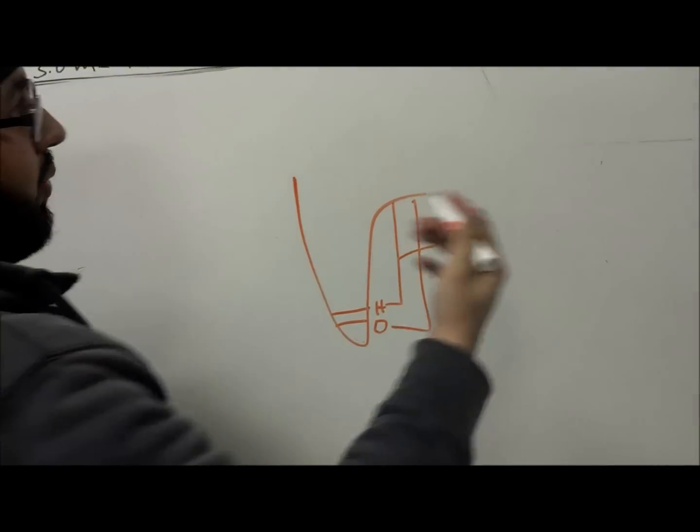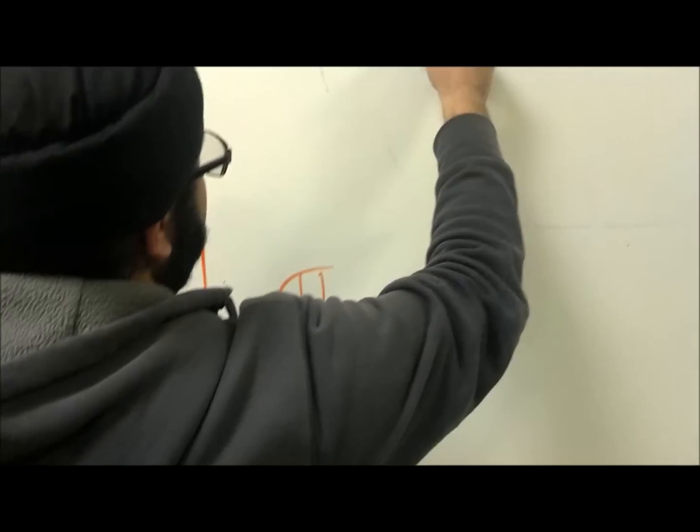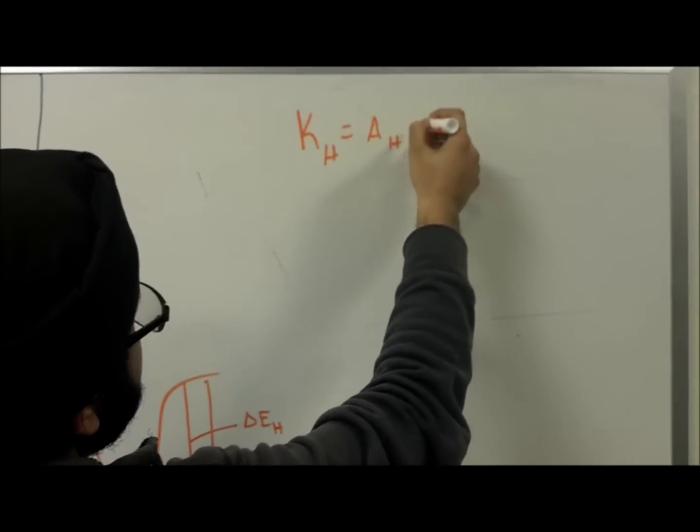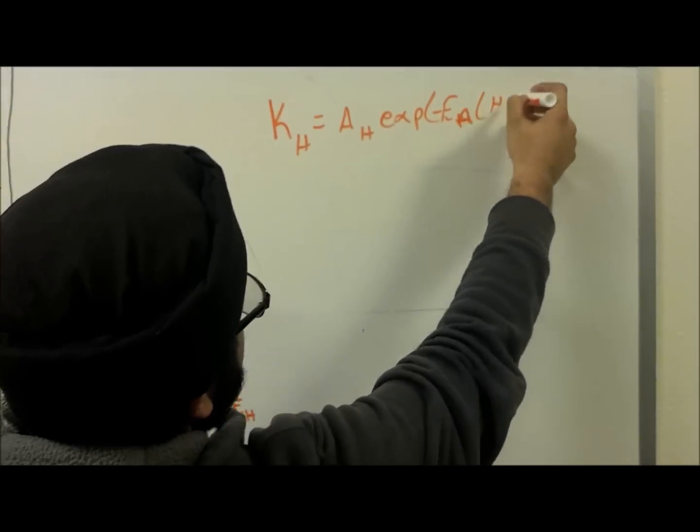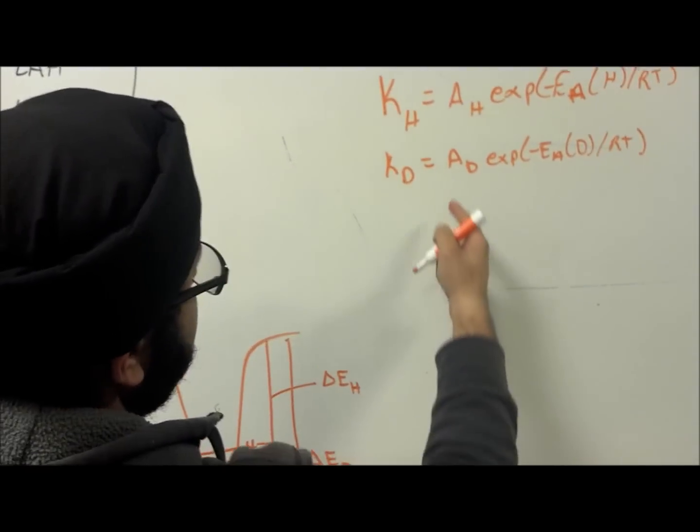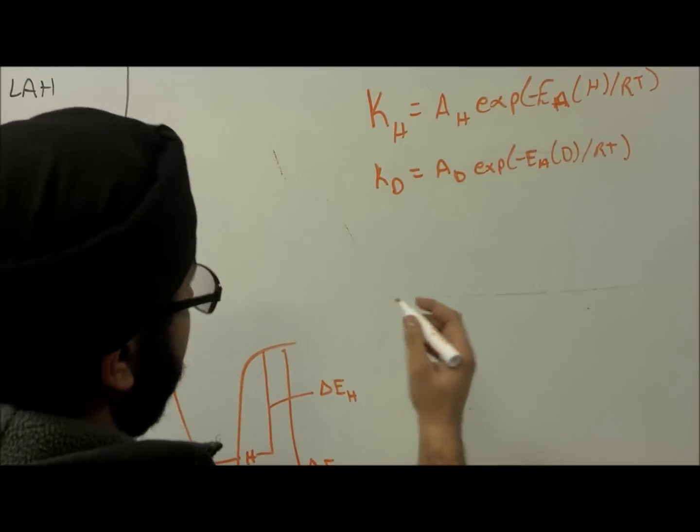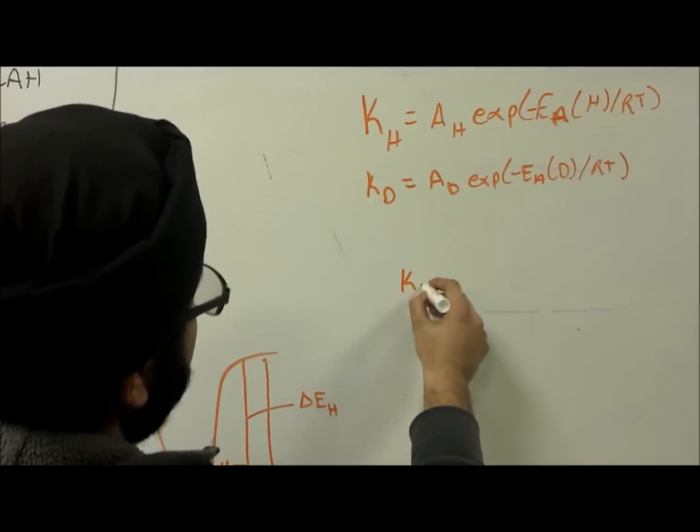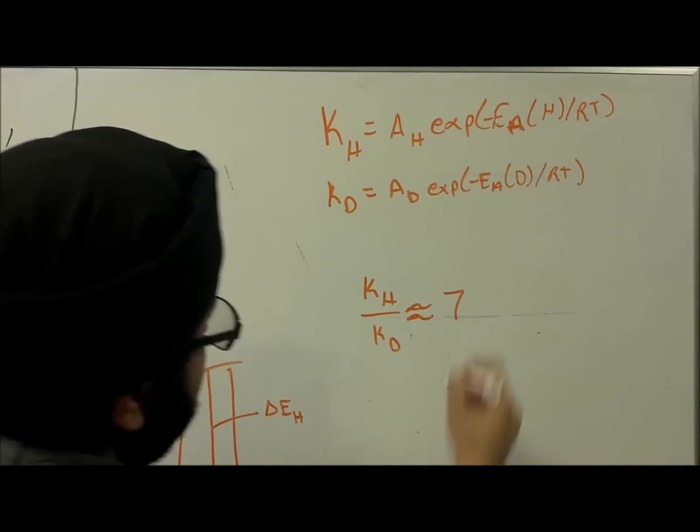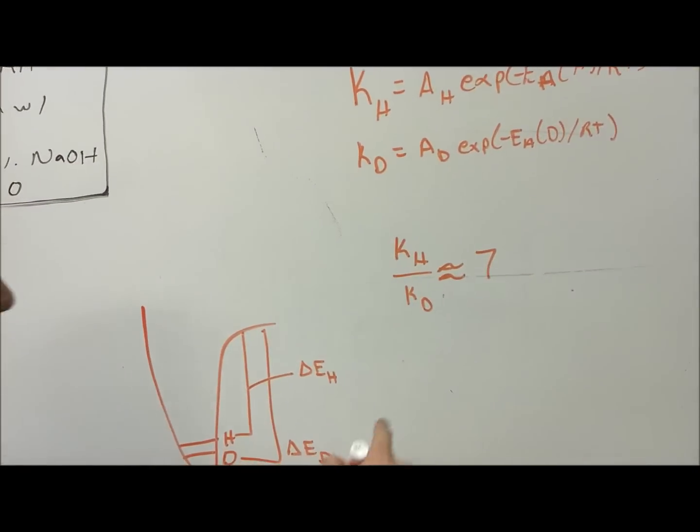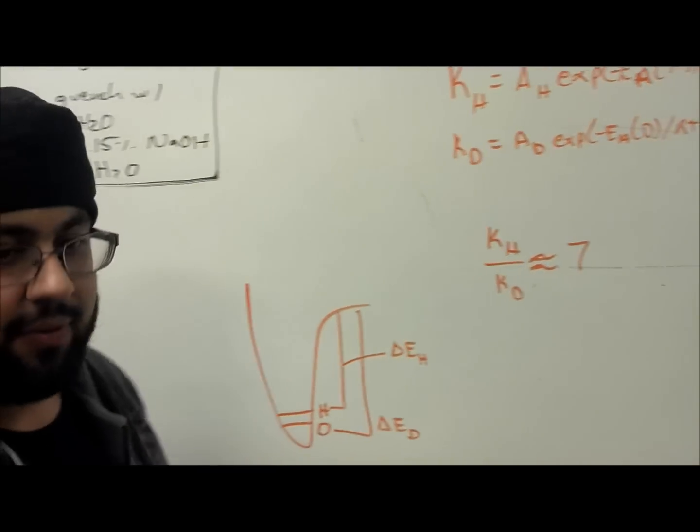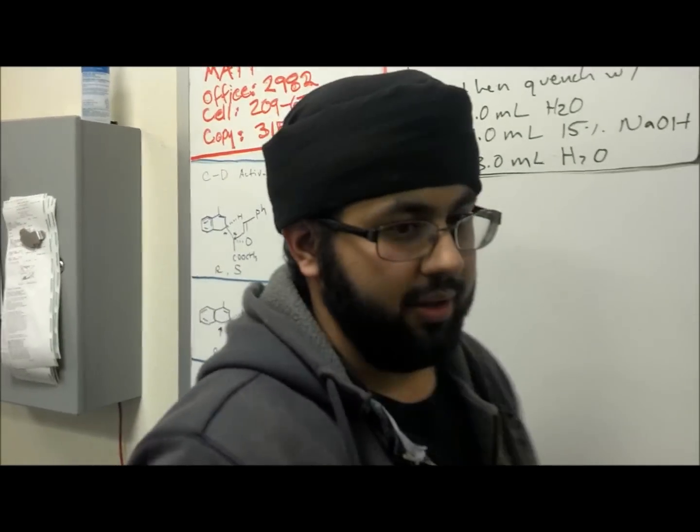And we have these rate constants for the carbon-hydrogen and carbon-deuterium bond, which if we calculate out, assuming that AH and AD are equal to each other, we get a value of about 7. And this value tells us that the carbon-hydrogen bond is 7 times more likely to dissociate than the carbon-deuterium bond.